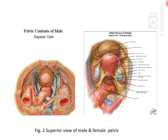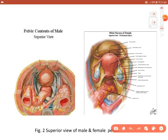In the superior view of the pelvis — both male and female — the sigmoid colon is continuous with the rectum. In the male, the urinary bladder lies anterior to the rectum. In the female pelvis, anterior to the rectum is the uterus (body and cervix) and the urinary bladder.